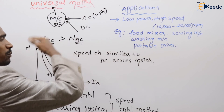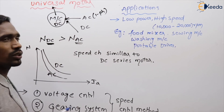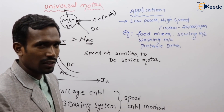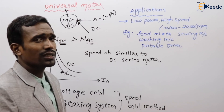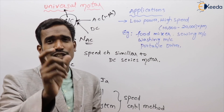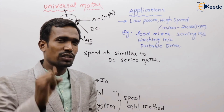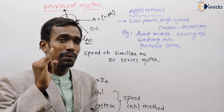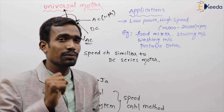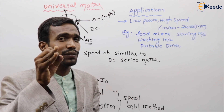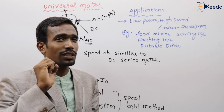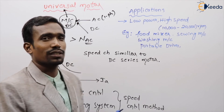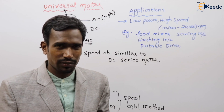This completes the discussion on special machines of DC machines: first, the permanent magnet DC motor; second, the single-phase AC series motor; and third, the universal motor.